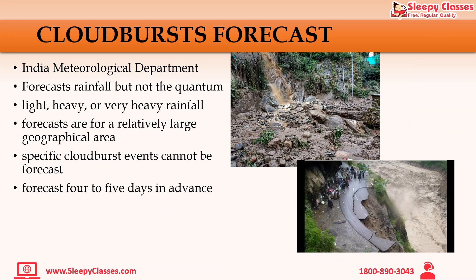When we talk about the forecast of cloudbursts, or the weather forecast of India, the Indian Meteorological Department works for weather forecasting in India. The forecast with respect to rainfall is possible by IMD, but the exact quantity of rainfall is not possible to predict. If we look at three measurements — light, heavy, or very heavy rainfall — a 3 to 4 day forecast is possible, but the actual quantity of rainfall in any specific area cannot be determined.